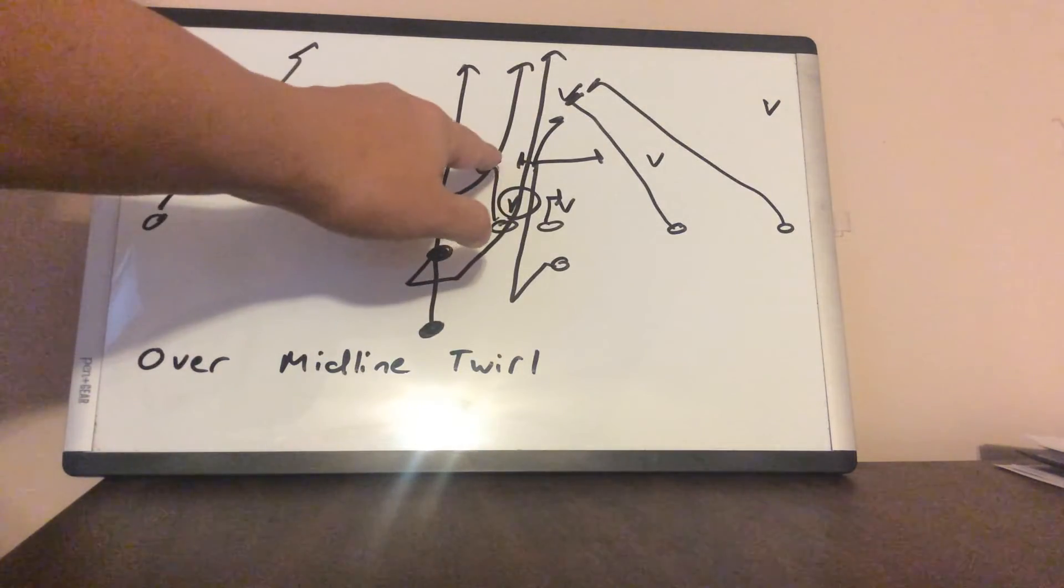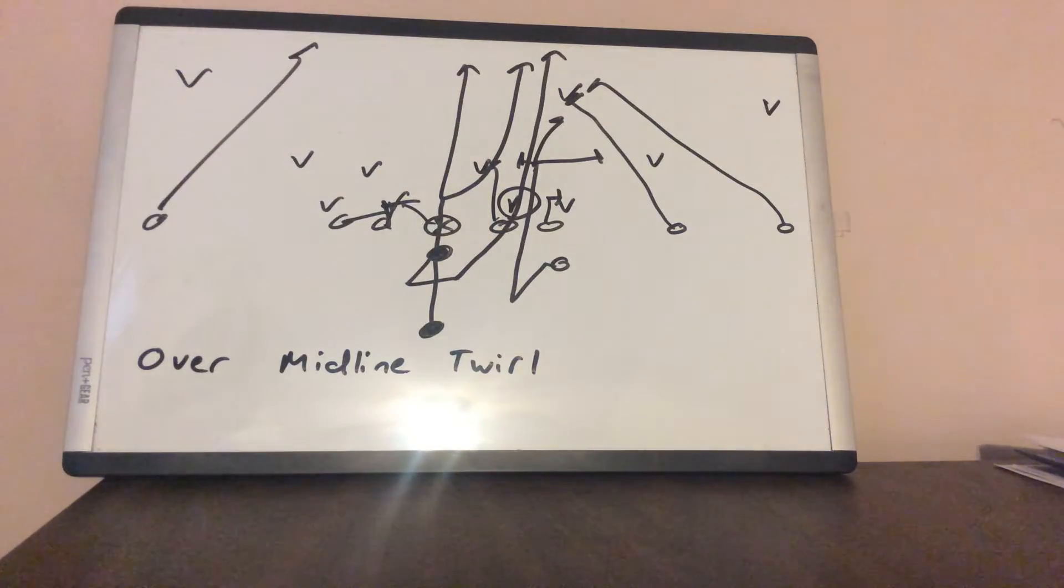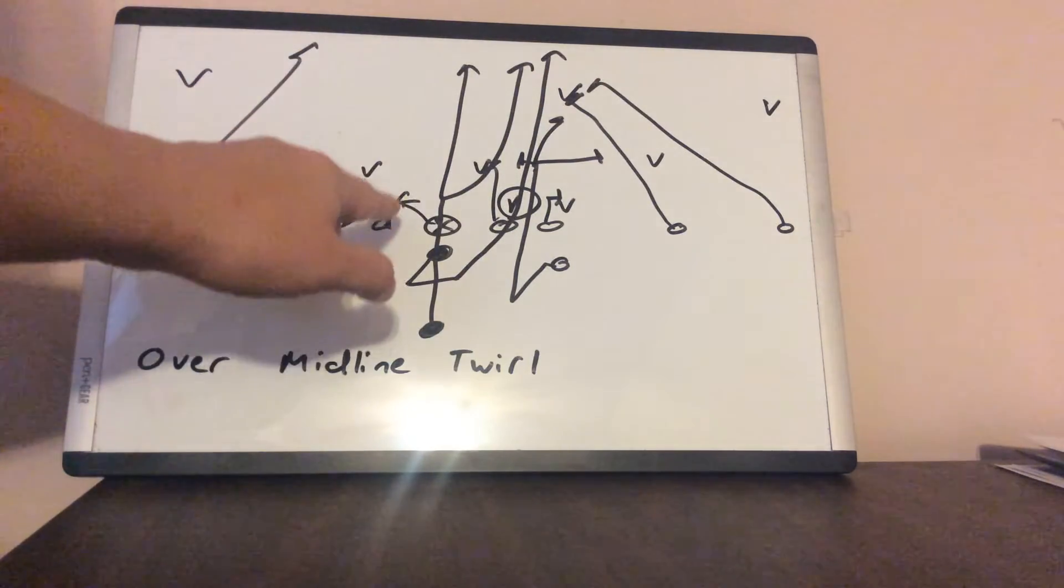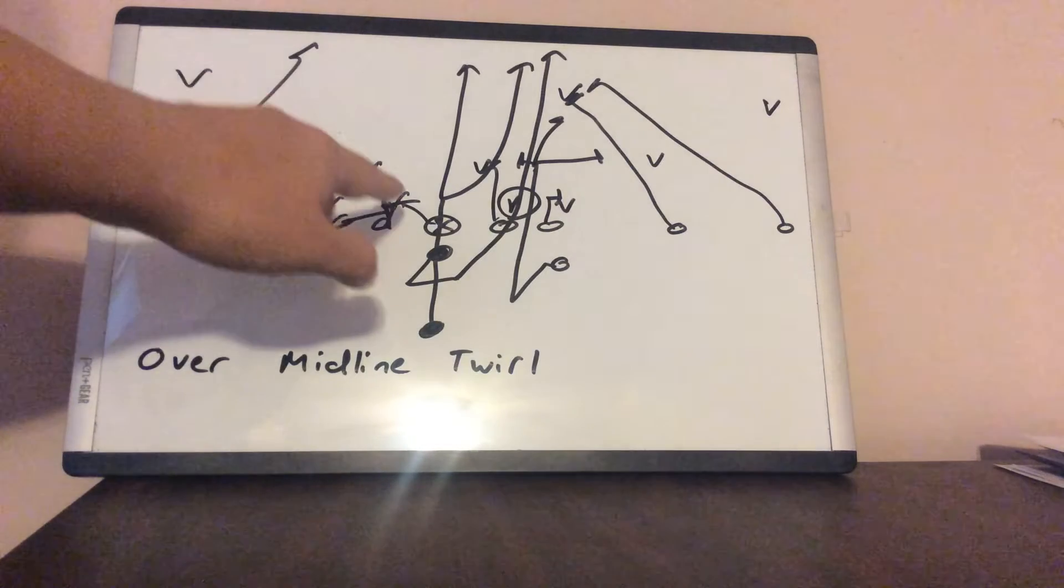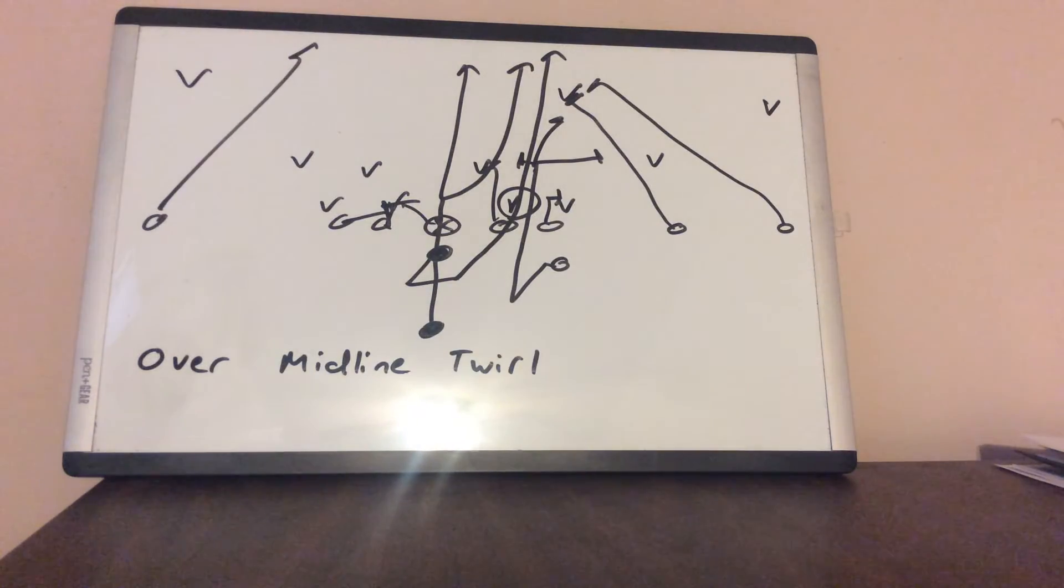The guard is going to veer inside. He's going to block the mic to the free safety. But the good thing about running it out of over is you're probably going to pull the safety over so he could end up all the way out the backside corner if the backer runs over the top. The center and the backside guard are going to double team the action key, which is the first defensive lineman inside the read. So they'll double team the two eye and vertically remove him.